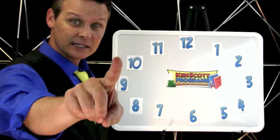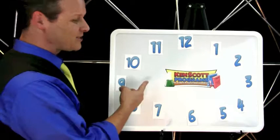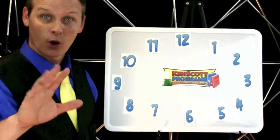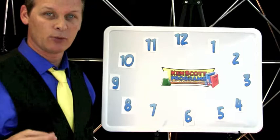Did you feel that? Nothing happened yet, but watch. Behind me here there's a clock — a normal clock, one through twelve. What I want you to do at this moment is think of any number on this clock, one through twelve. Think of that number now. Perfect. Now keep that number in your mind and don't forget it, because what you're about to do is spell that number that you're thinking of.